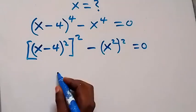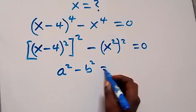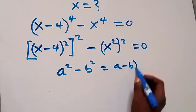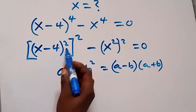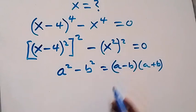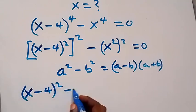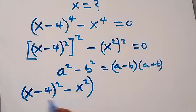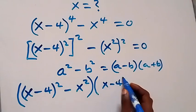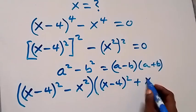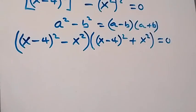This follows from a squared minus b squared — the difference of two squares — which factors as (a minus b)(a plus b). Applying this, with (x minus 4) squared serving as a and x squared serving as b, we get: [(x minus 4) squared minus x squared] times [(x minus 4) squared plus x squared] equals zero.